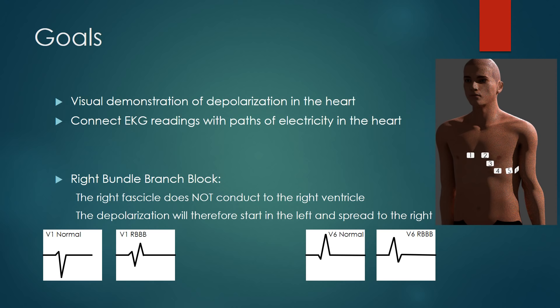Before we begin, we should review right bundle branch blocks. In a right bundle branch block, the right fascicle does not conduct to the right ventricle. Instead, depolarization moves from the AV node through the bundle of His and to the left ventricle. The left ventricle then depolarizes, and electricity spreads through the intercalated discs to the right ventricle. In effect, the left ventricle will depolarize before the right ventricle.